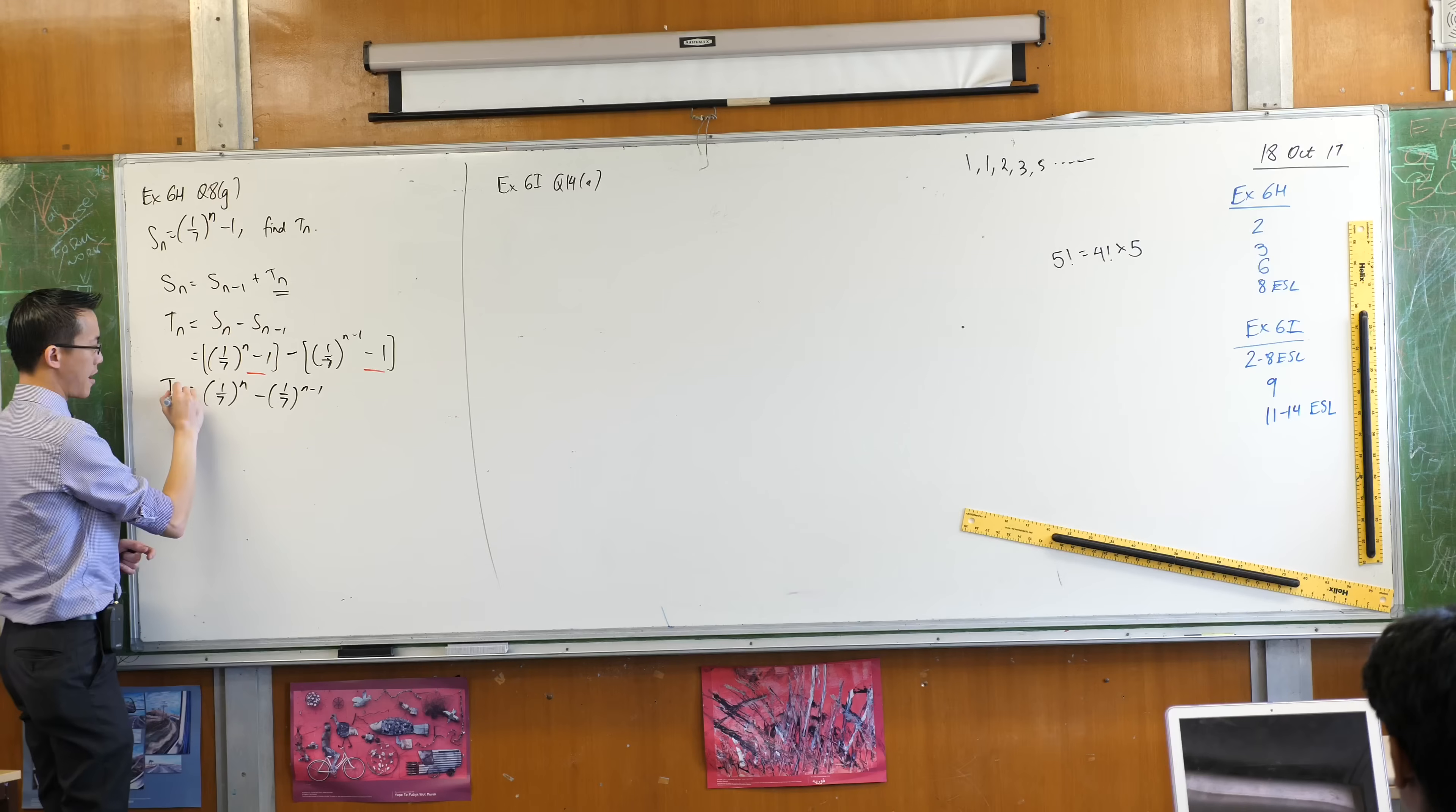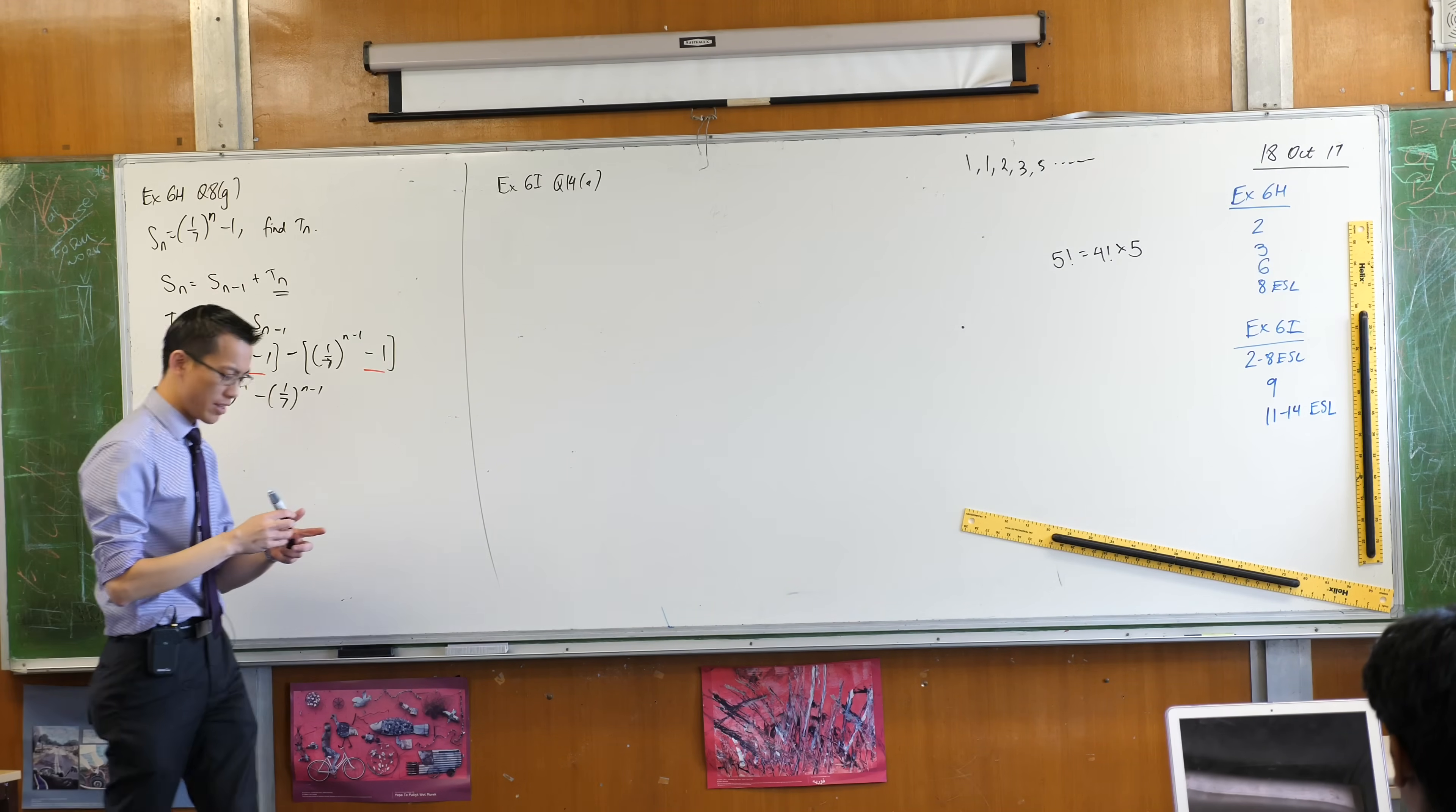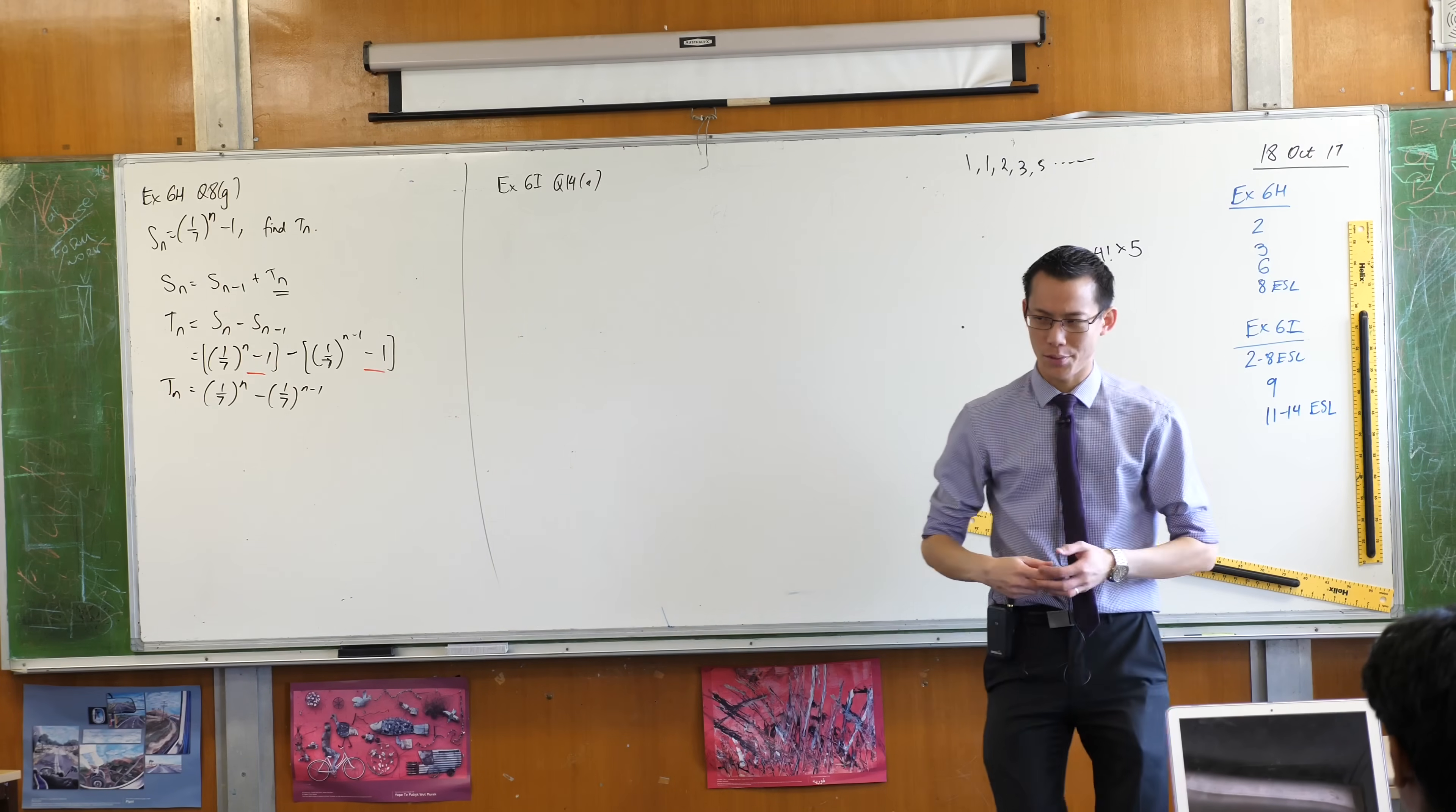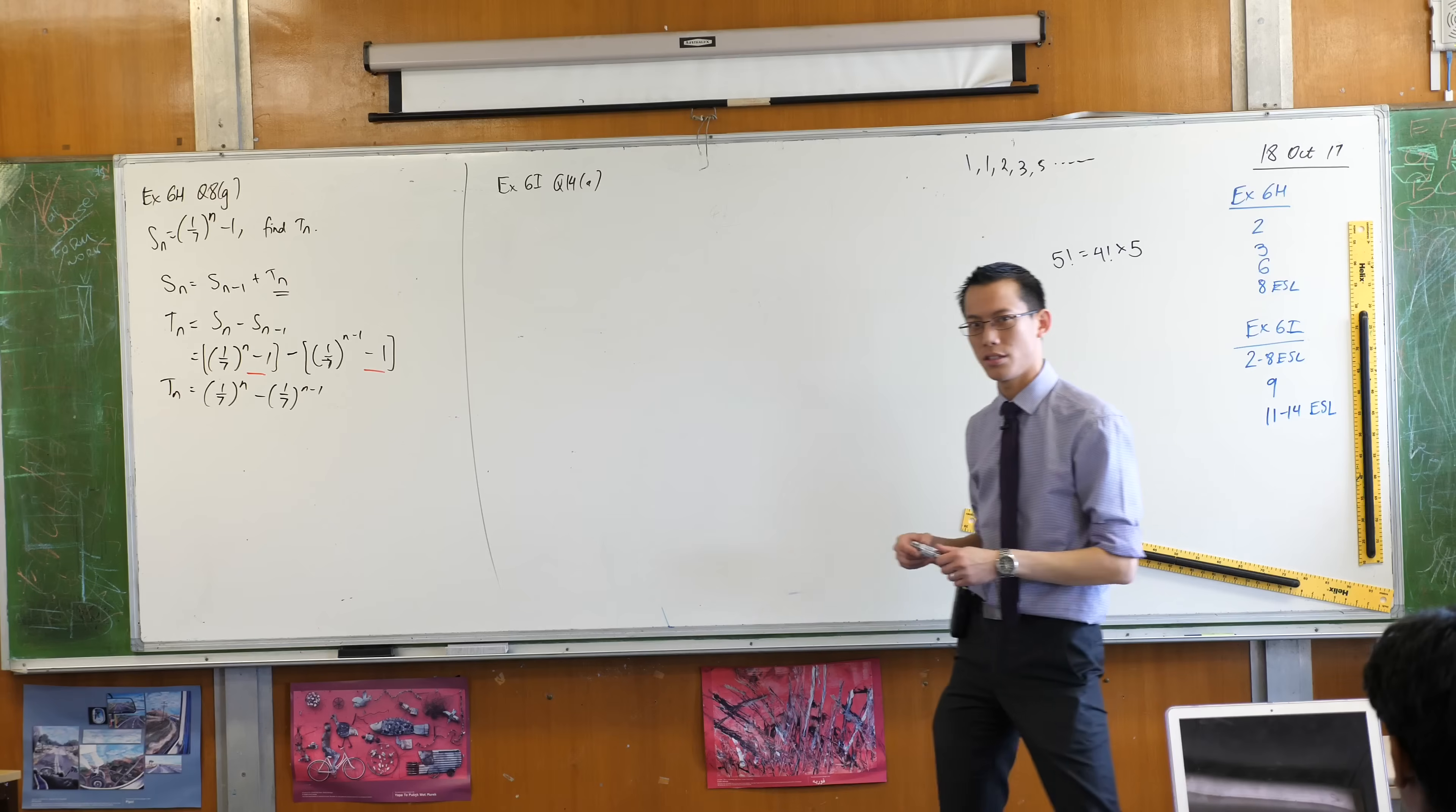Now, in a real way, that is the nth term. There you go, there's an expression. So in some ways you're finished, but we can simplify this, right? Think back to your two unit, your knowledge of index laws and that kind of thing. What could I do with this that might help? Any suggestion?